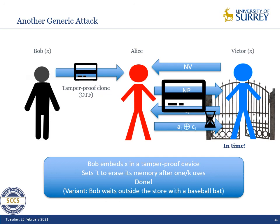We tend to ignore very basic attacks because it's convenient and we can't do anything if we consider them — but that's something we should keep in mind. A variant is that Bob gives his card to Alice for her to go buy something inside the store, and waits for Alice with a baseball bat at the exit of the store so that he can get his card back. In this way, Bob retains his card and still performs a terrorist fraud.